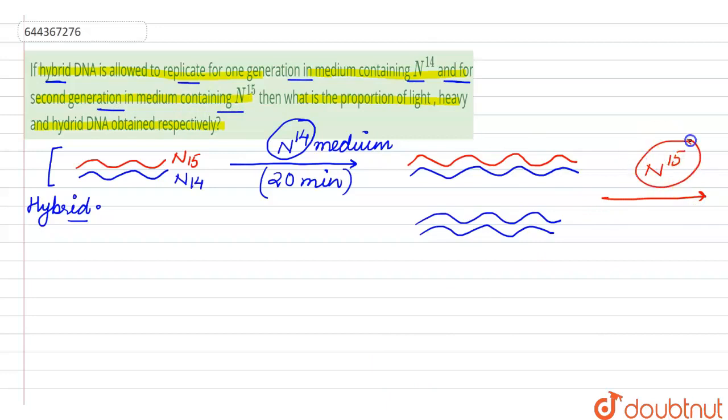The N15 is a heavy isotope medium which is taken from ammonium chloride. Now these four strands, these are the four parental strands. Now these four strands are going to separate. So when these strands separate, one is the N15 strand whereas the other three strands are the N14 strand.